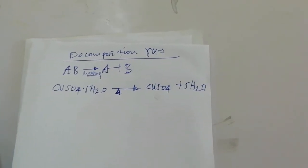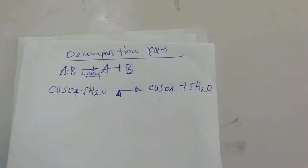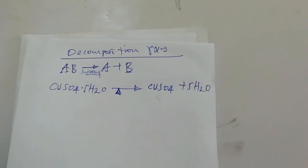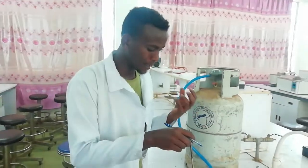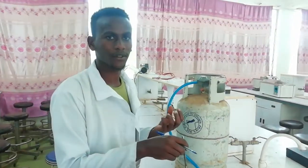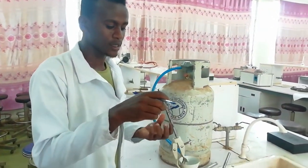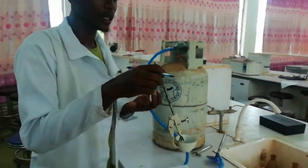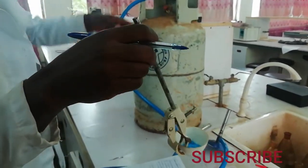After it loses its water, when we add water dropwise, it turns back into a blue color, which is copper sulfate pentahydrate. Now let us heat this copper sulfate pentahydrate to get copper sulfate.